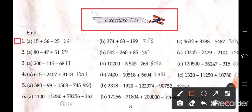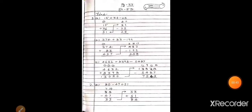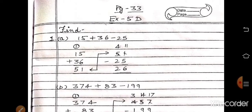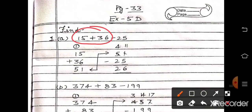Part A: 15 plus 36 minus 25. For this you have to take out your notebook. We will do this work in our copy. You have to write like this in your notebook: page number 33, exercise 5D, question number 1A — 15 plus 36 minus 25. So first add 15 and 36.